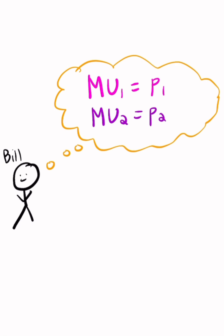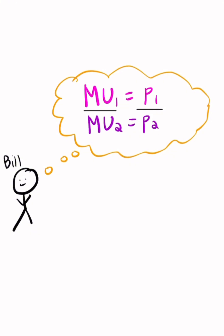Well in this situation marginal benefit is equal to marginal utility which is equal to the marginal cost which is equal to the price and so we get these two equations. And since we have two equations we can divide one equation by the other equation we get the ratio of the marginal utilities is equal to the ratio of the prices.